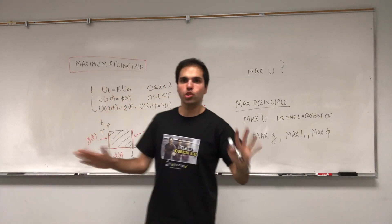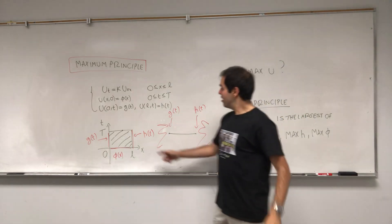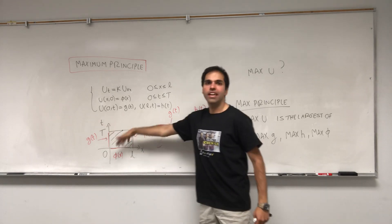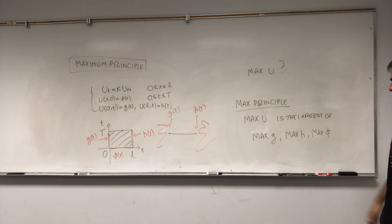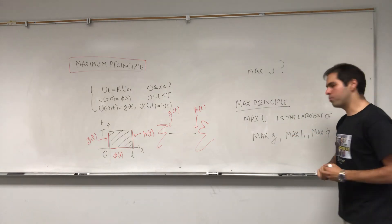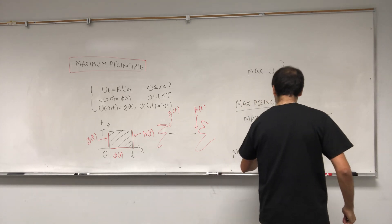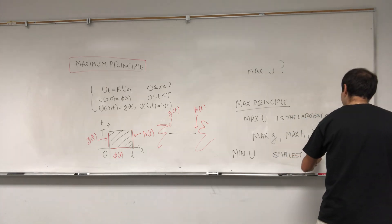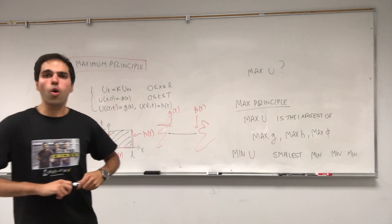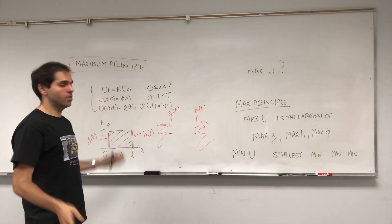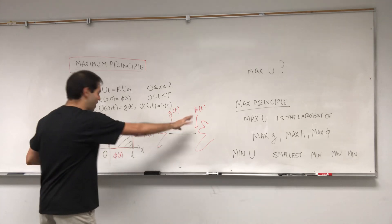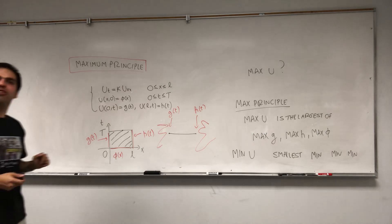There's also the strong maximum principle, which says it actually cannot be hotter inside unless u is constant everywhere. The maximum is seriously attained at the lateral parts or at the bottom. By the way, if you replace u by minus u, you can also get the minimum principle, which says that the minimum of u is the smallest of min(g), min(h), and min(phi). So it's also coldest at the bottom part and the boundary parts.